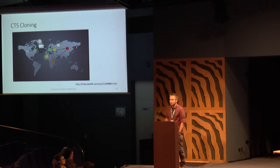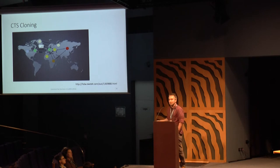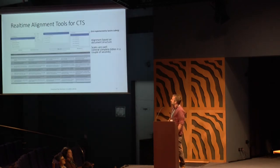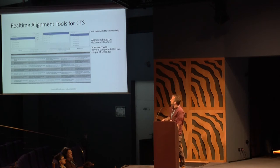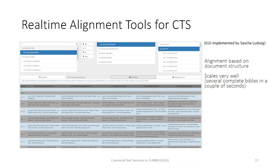Now it's even connected to a client infrastructure, which potentially opens up WebLicht and so on. Using the structure information that is implicitly encoded in the CTS URNs, two alignment tools were created. You can see here that these are the documents and each of the text parts is aligned based on their CTS label of the passage.